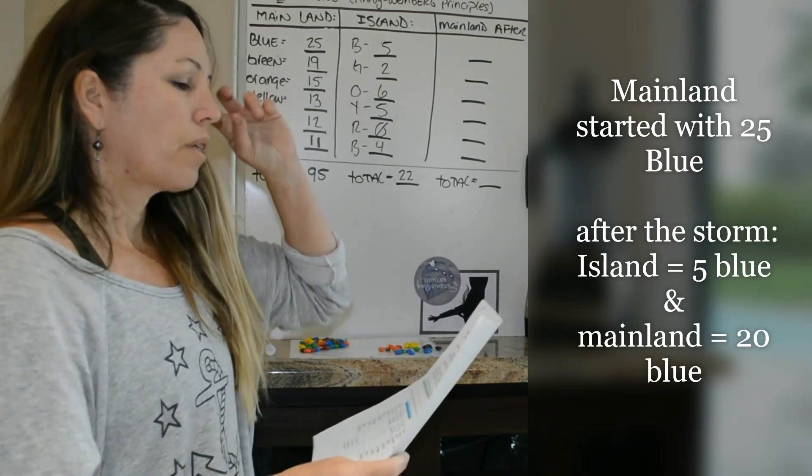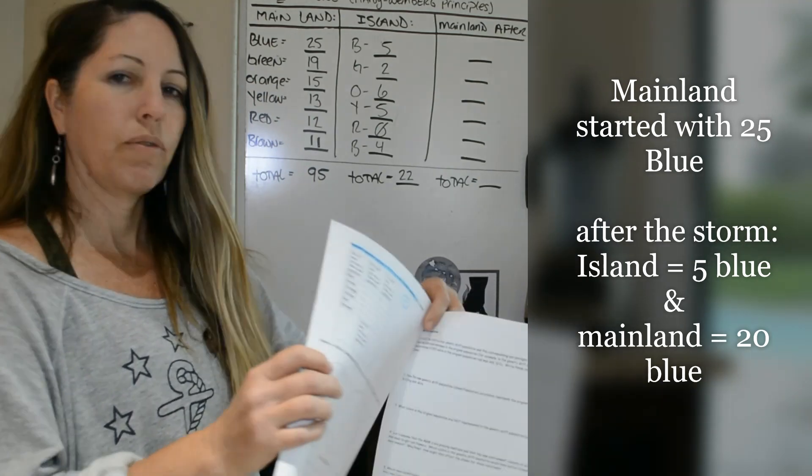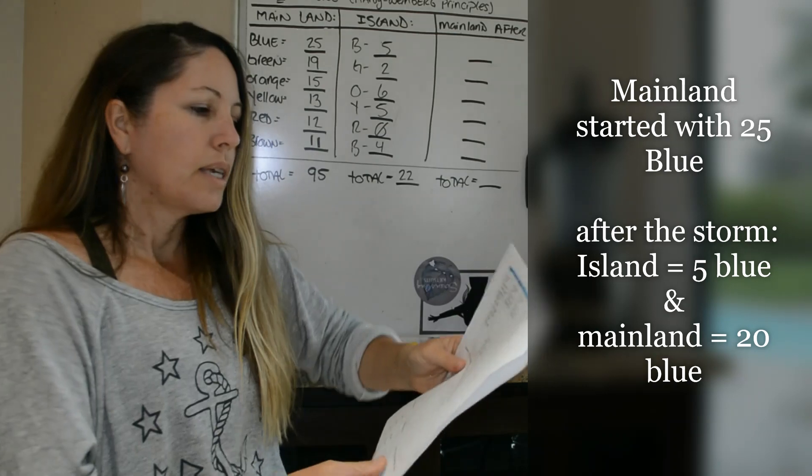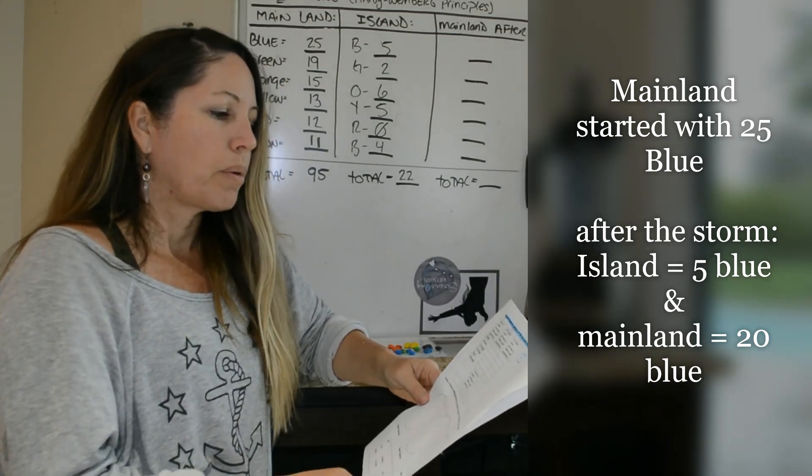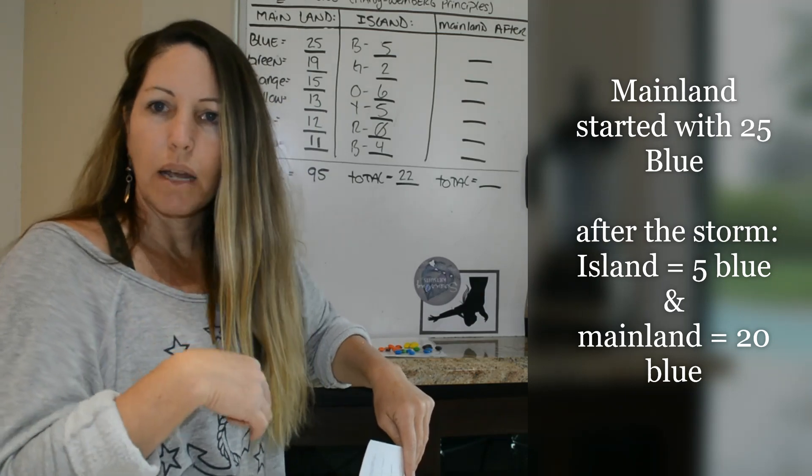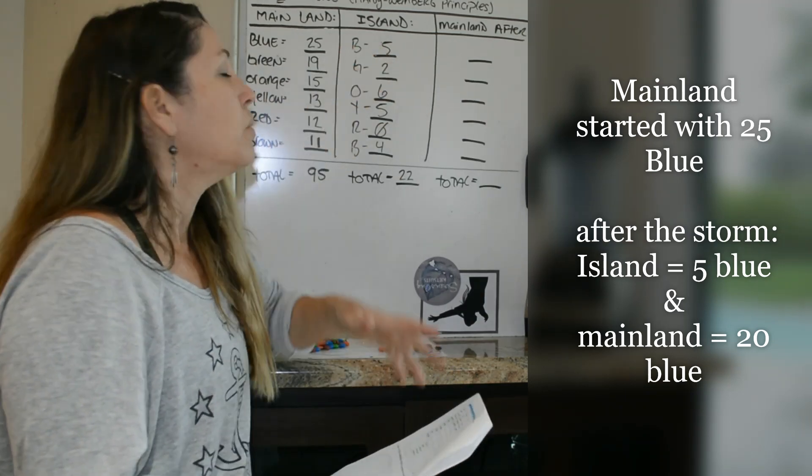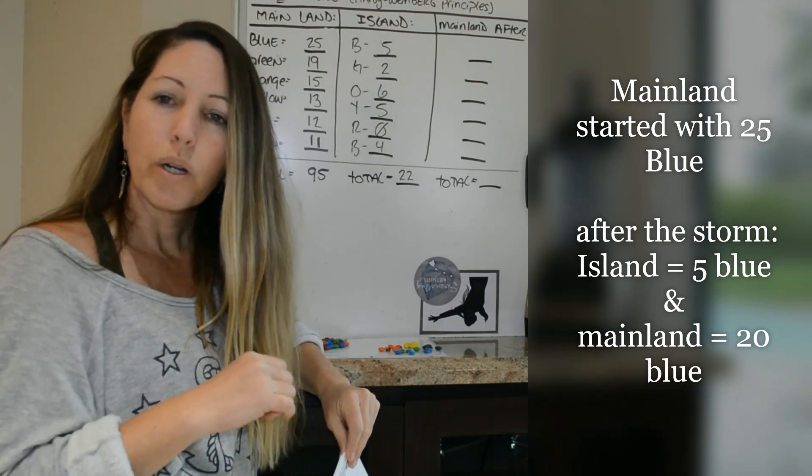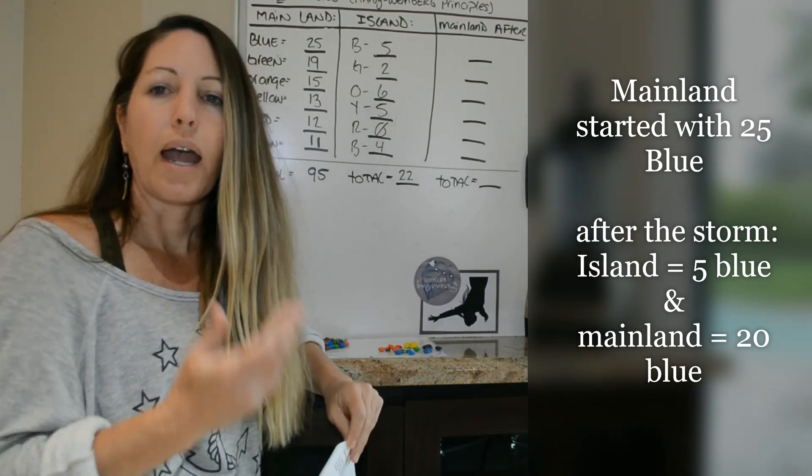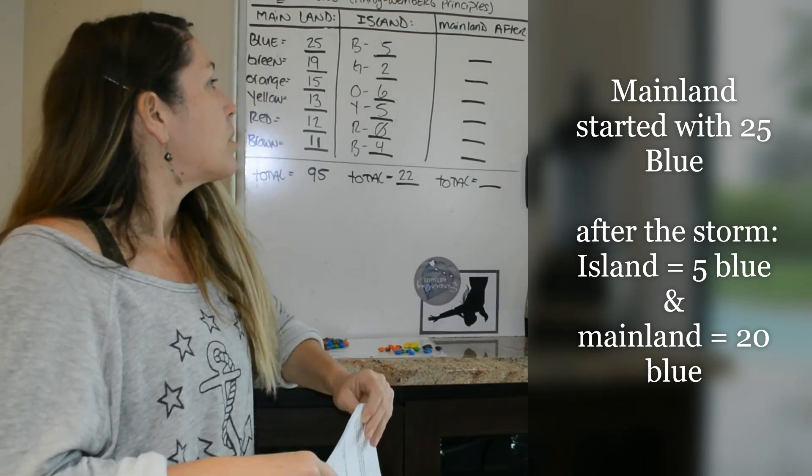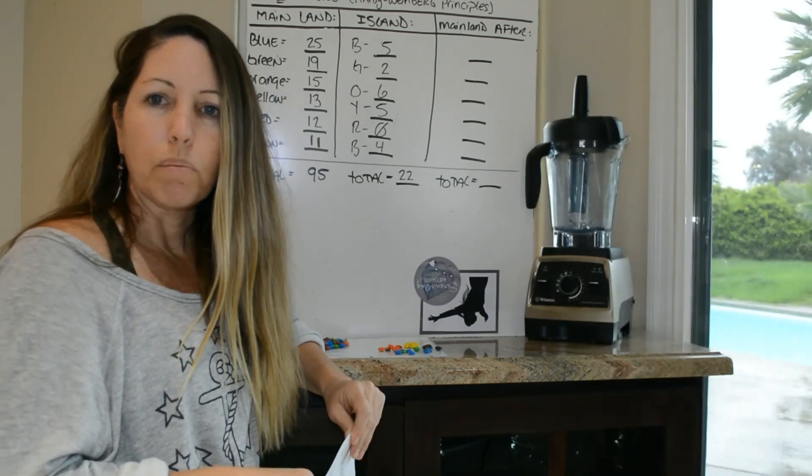Now, for the third data table, if you flip the page over, you'll see a third data table. This data table is the mainland population after the storm. So this is real easy, guys, just minus the numbers. So if you have five blue that went to the island, and you originally started with 25 on the mainland, how many do you have left now on the mainland? Well, you have 20. So it's still a pretty big population of blue.